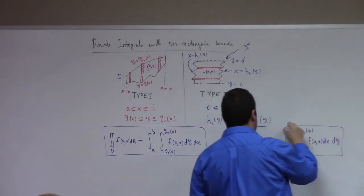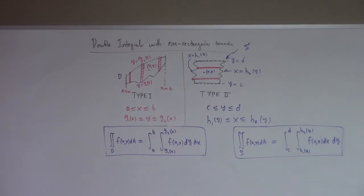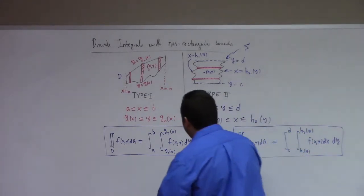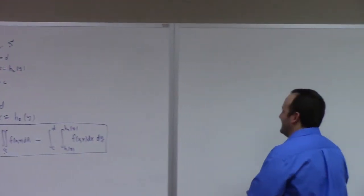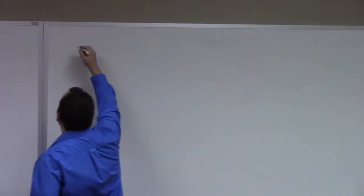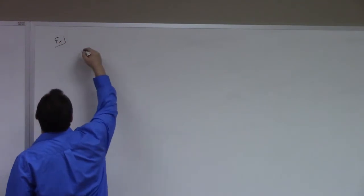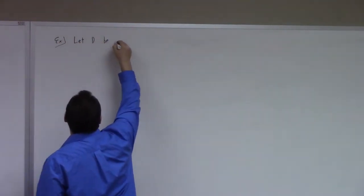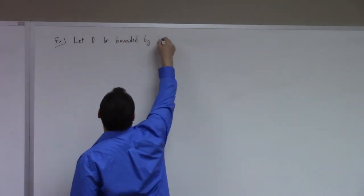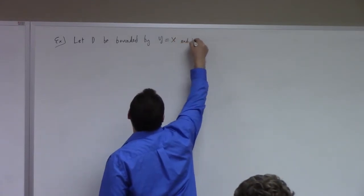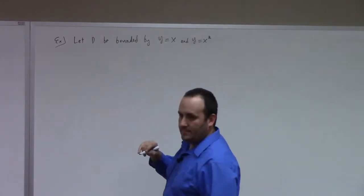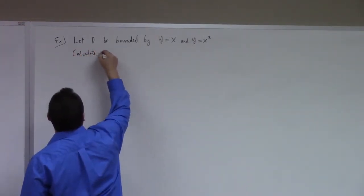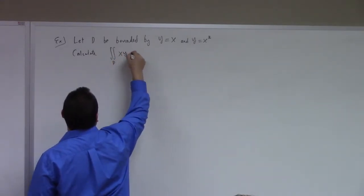Bless you. Gesundheit. All right, so this is how we do it. Let's look at an example. Let d be bounded by y equals x and y equals x squared. Calculate the integral over d of xy dA.